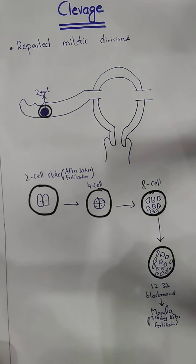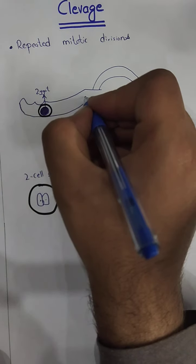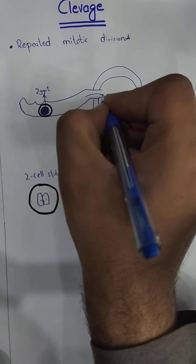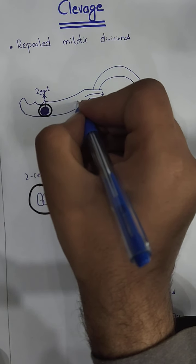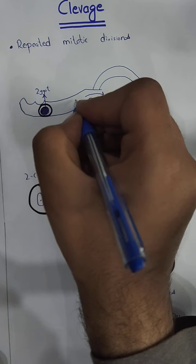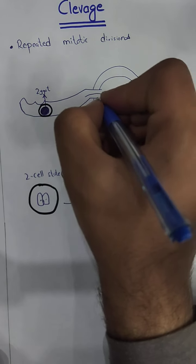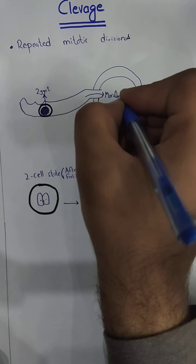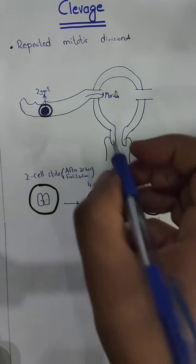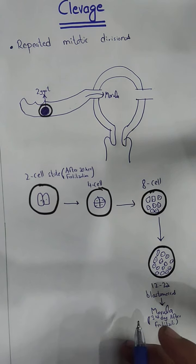The Morula forms after fertilization and will enter the uterine cavity. It moves through the two-cell stage, four-cell stage, and enters the uterine body on the third day after fertilization via the fallopian tube.